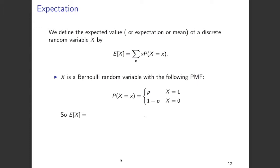To calculate the expectation of a discrete random variable denoted by E of X, we multiply small x with the probability that the random variable capital X takes this value small x. We then sum over all possible values of small x which this random variable X can take.